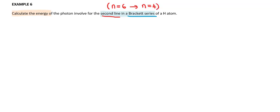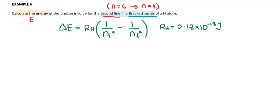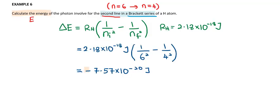This question asks about the energy and its relationship with the transition of the electron. The formula we need to use is: ΔE equals R_H times (1 over n_initial squared minus 1 over n_final squared), where R_H is 2.18 times 10 to the power of minus 18 joules. Substituting all the information into this formula, you should get negative 7.57 times 10 to the power of minus 20 joules.